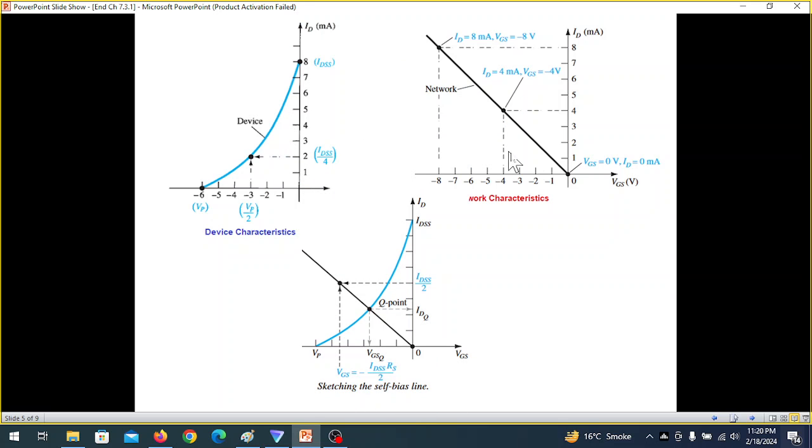And this is from the Shockley's graph. So we have these two graphs and ultimately we will superimpose the network graph on the device curve to find the Q point. So Q point we can find from this line where it intersects the device curve.